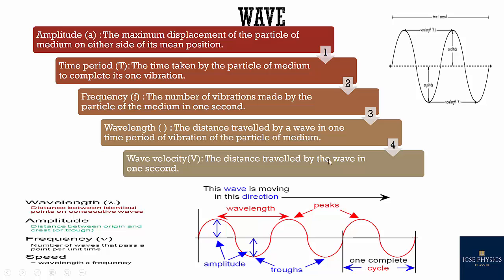Then what is wave velocity? The distance traveled by the wave in one second. There is a relationship between wave velocity, wavelength and frequency. That is speed is equal to wavelength into frequency. Speed v is equal to frequency f times lambda. Wavelength symbol is lambda.